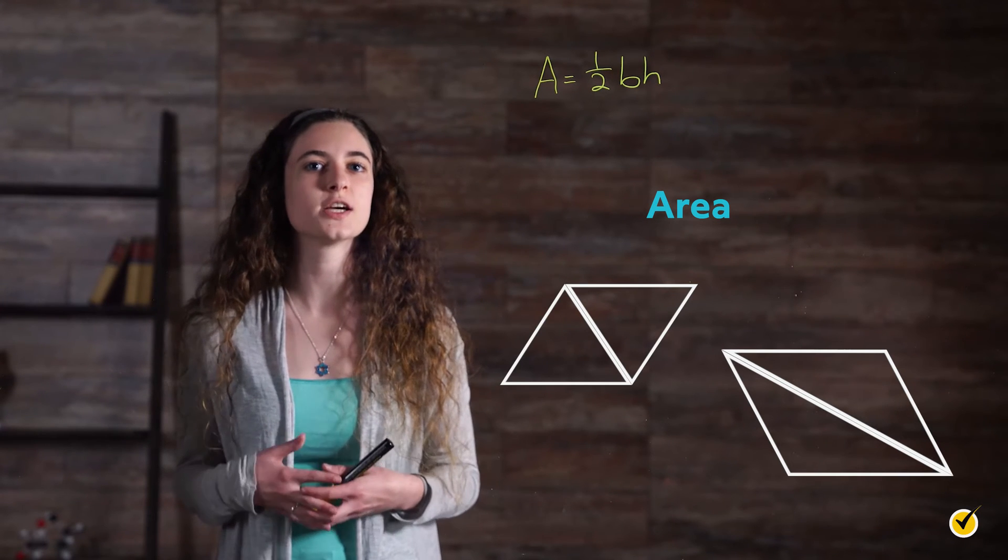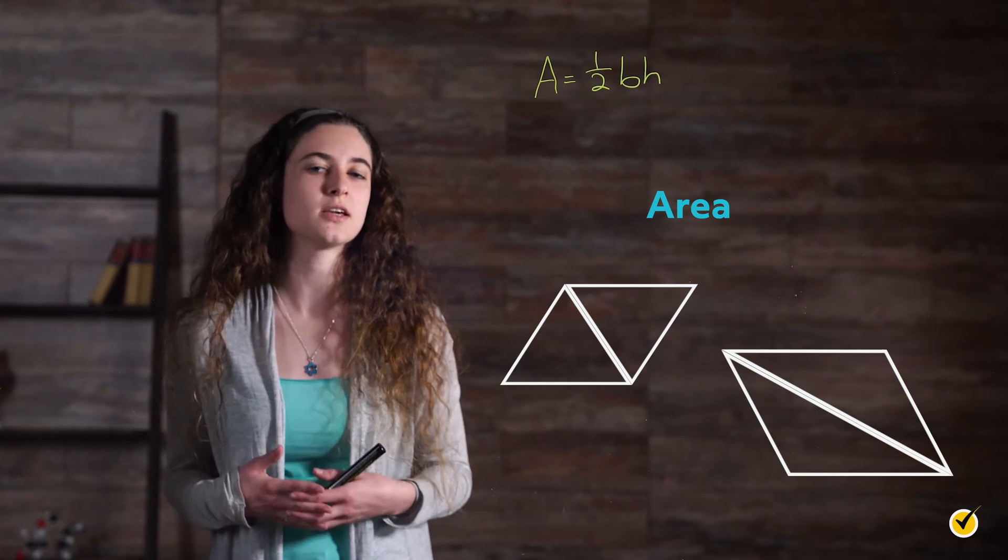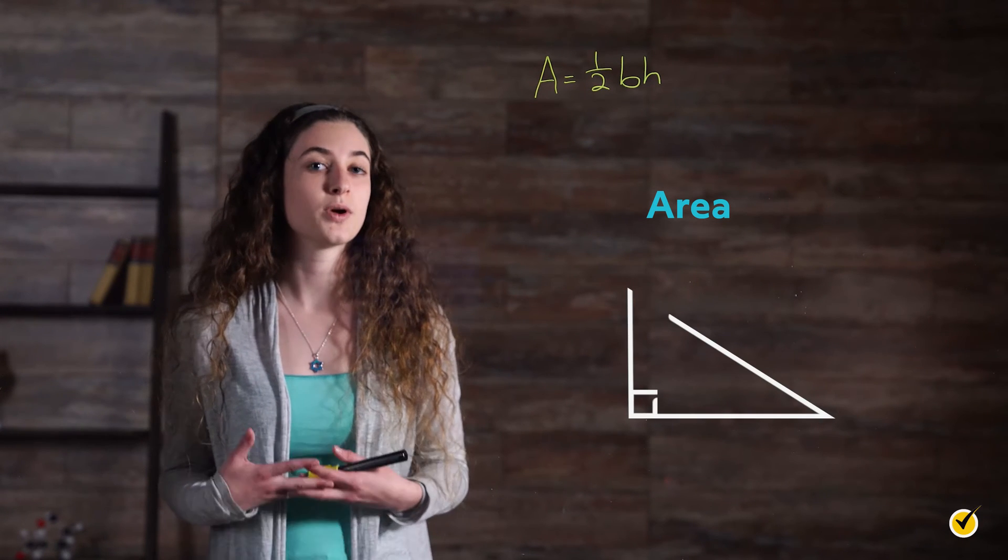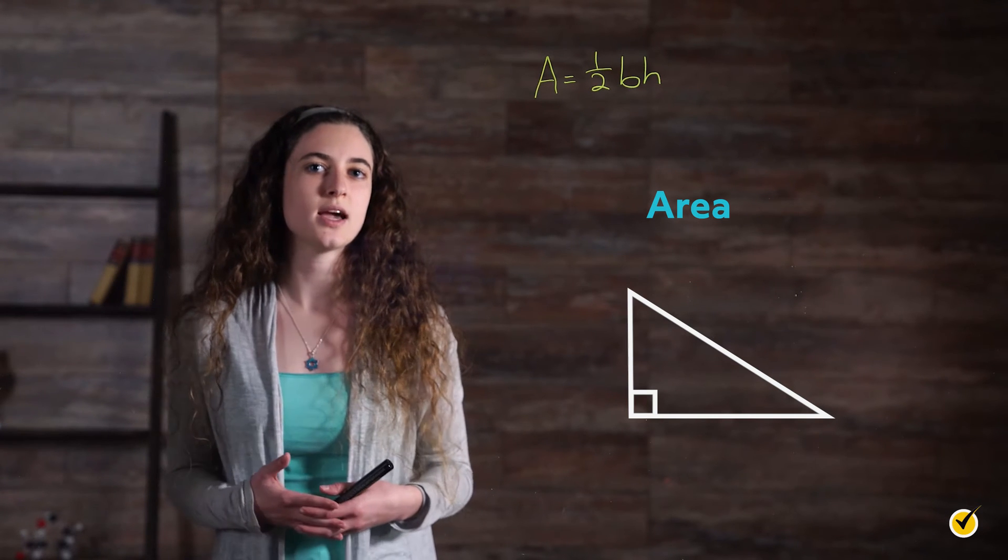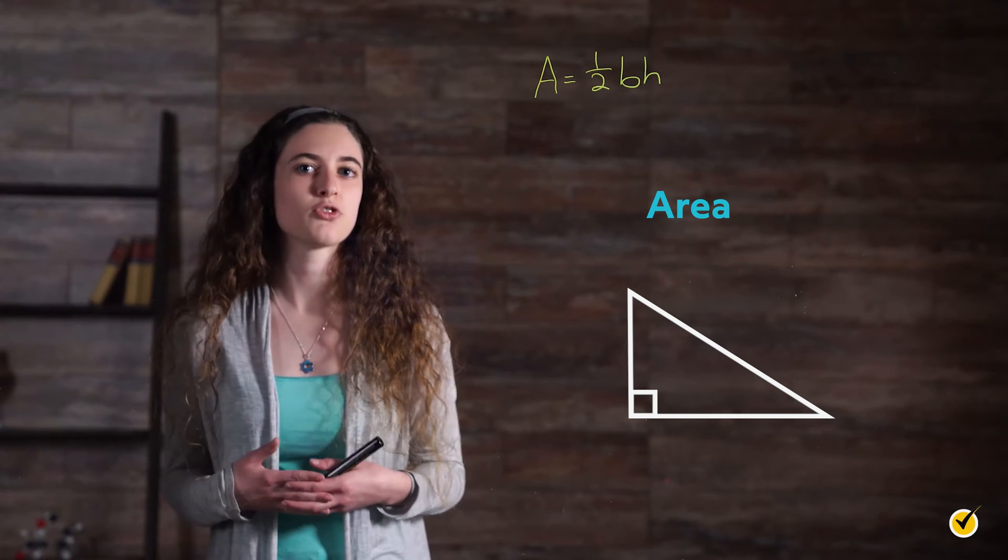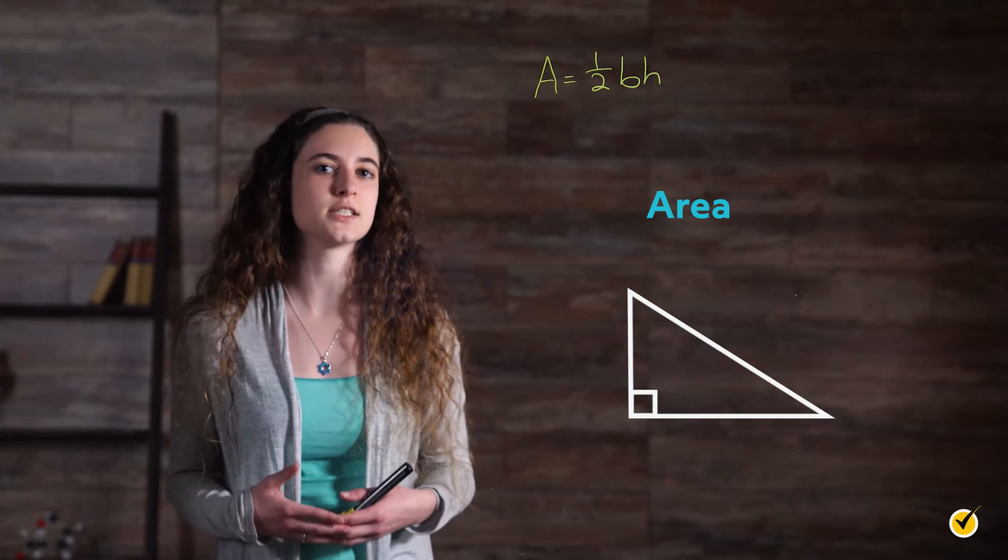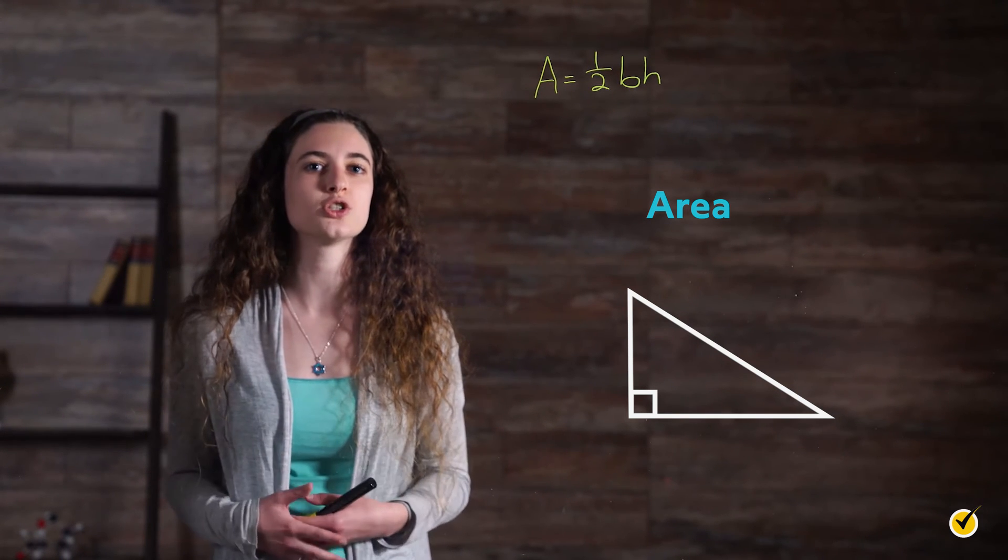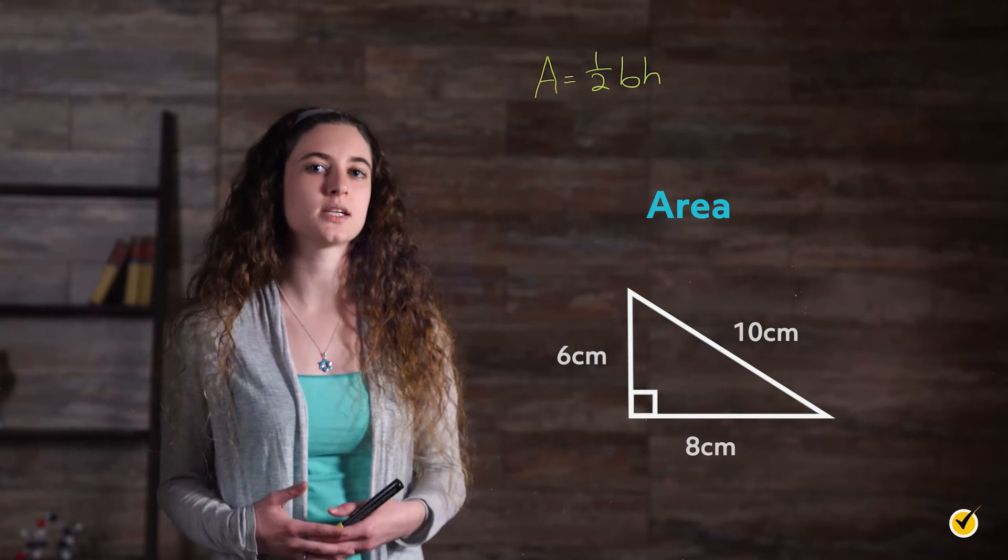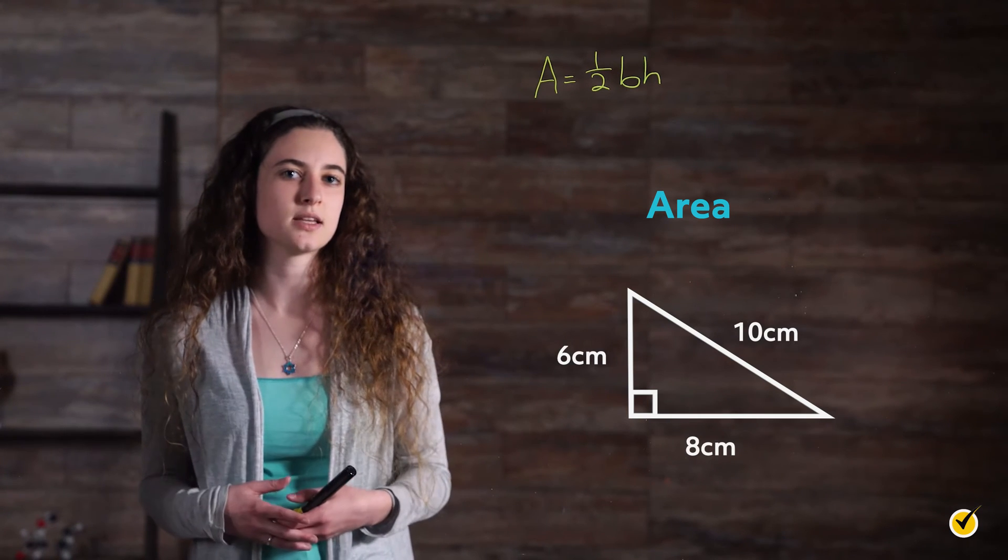For triangles, the formula for area does work a bit differently depending on the type of triangle. Let's start with right triangles. We have our formula, but the question we need to answer is which side is B and which side is H. For a right triangle like this one, B and H are the two sides adjacent or next to the right angle. It doesn't matter which is which, so let's say that B equals 6 centimeters and H equals 8 centimeters. Now we can plug them into our formula.